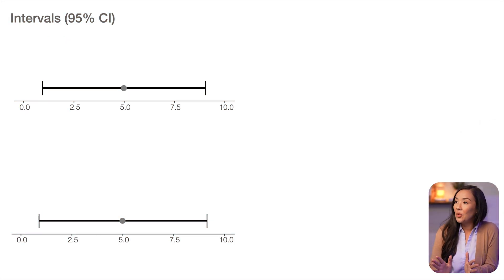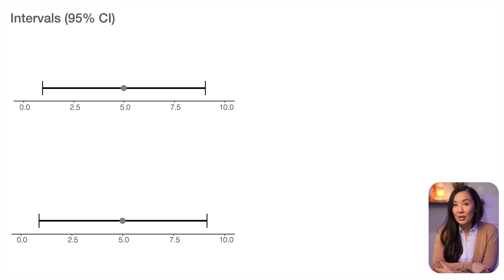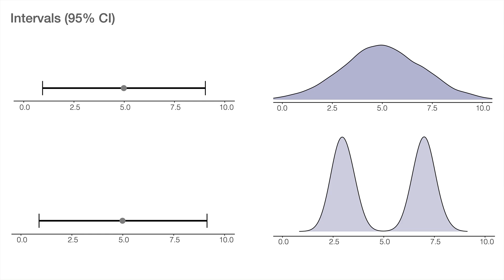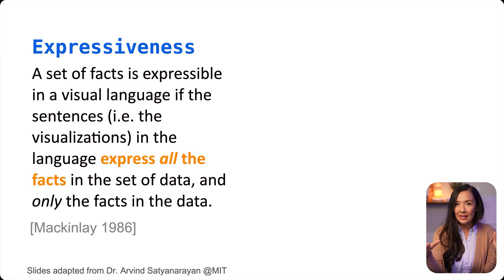Let's look at another example: two confidence intervals. These are 95% confidence intervals, and this is usually all you're presented with. If we're looking at this and trying to make conclusions, we might say these two datasets look pretty similar, maybe based on the same or highly similar data. If we drew that conclusion, we would be very wrong. The top one is based on a normal distribution and the bottom one is generated from a bimodal distribution. The underlying dataset is very, very different, but looking at just the confidence intervals hides or masks that important information.